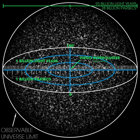The figures quoted above are distances now, in cosmological time, not distances at the time the light was emitted. For example, the cosmic microwave background radiation that we see right now was emitted at the time of photon decoupling, estimated to have occurred about 380,000 years after the Big Bang, which occurred around 13.8 billion years ago. This radiation was emitted by matter that has, in the intervening time, mostly condensed into galaxies, and those galaxies are now calculated to be about 46 billion light-years from us.